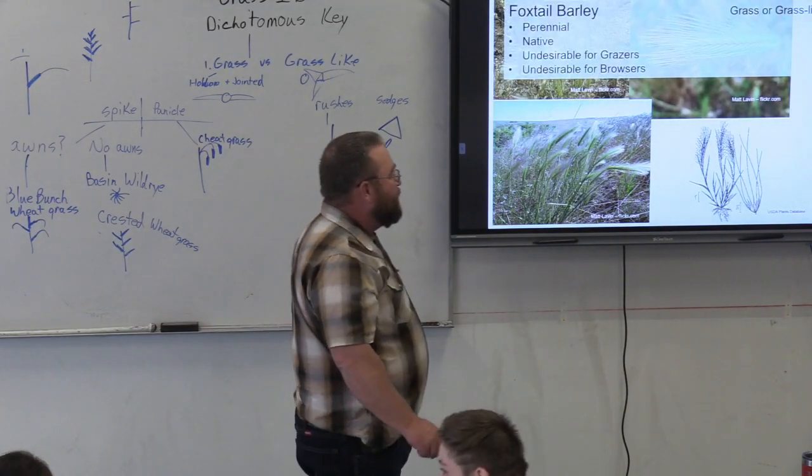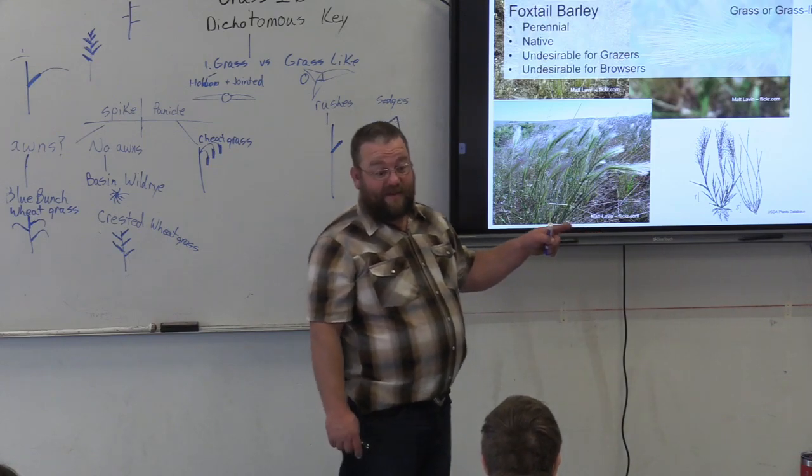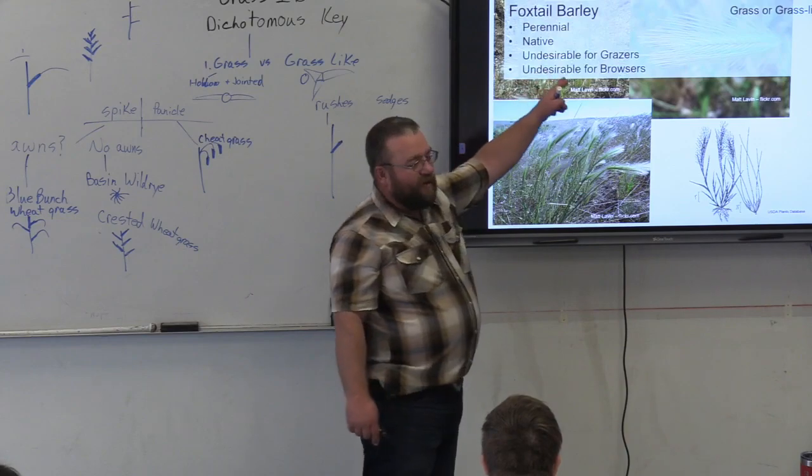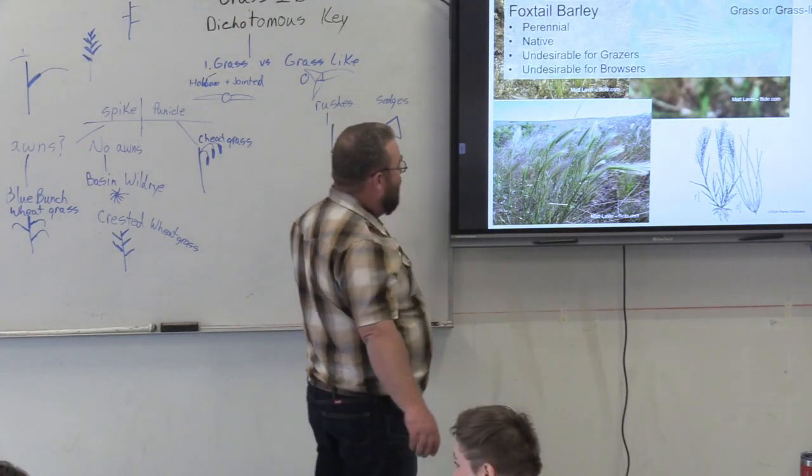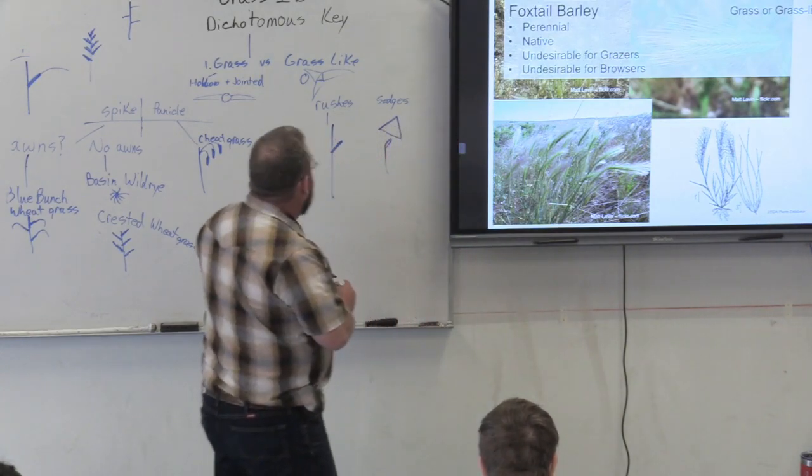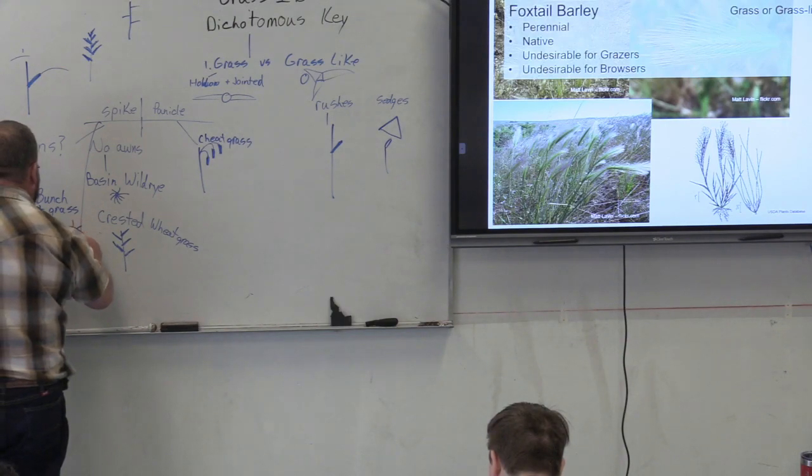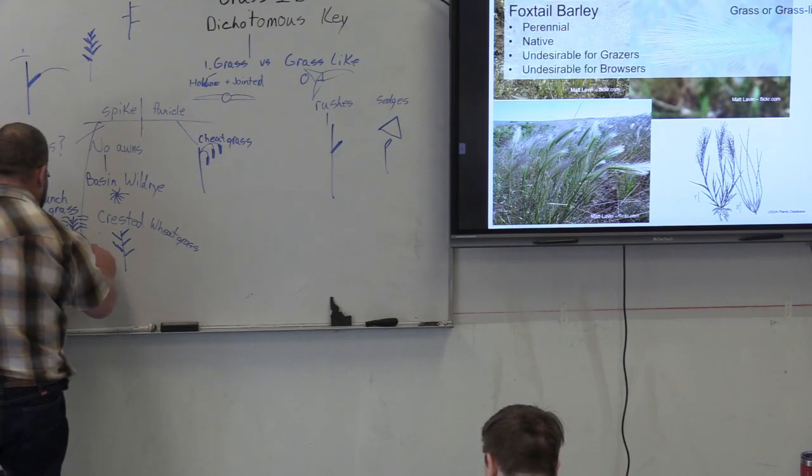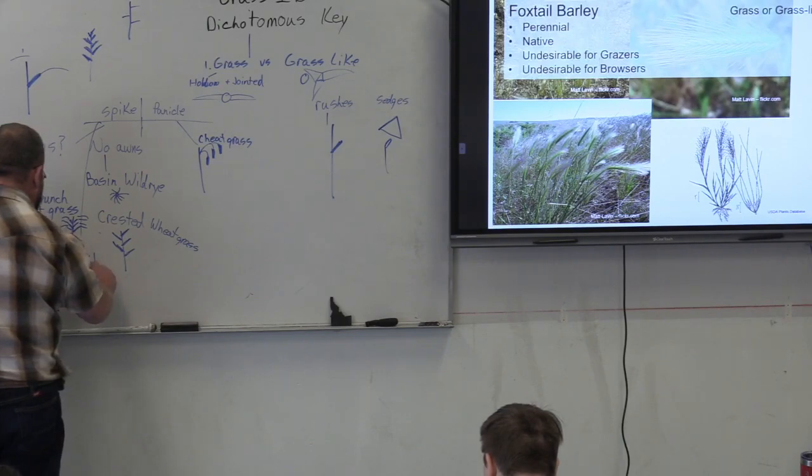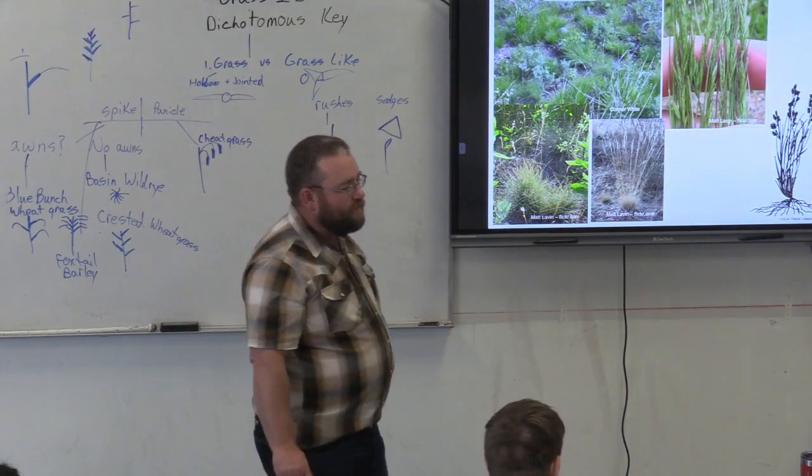Next: foxtail barley. Something to note about foxtail barley: does it have long awns? Yes. Barley. Long awns, right? What is its forage value? Undesirable. Things don't want to eat it. Animals don't want to always eat stuff with long awns. So it is a spike. I put down here foxtail barley. It is a spike. And it is a spike with lots of awns, very long awns. So it looks bushy. Foxtail barley.